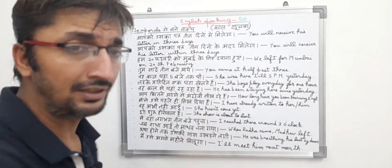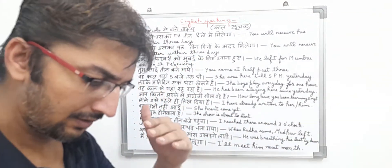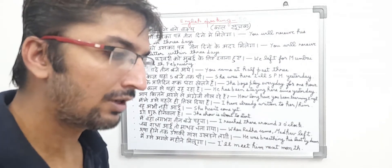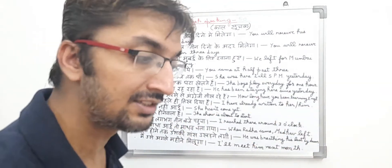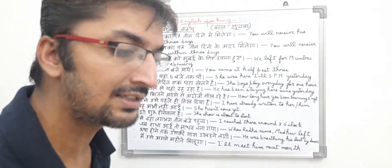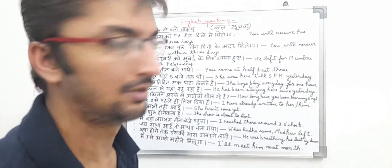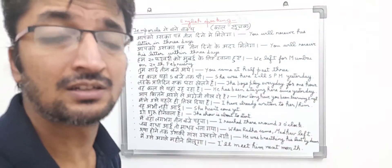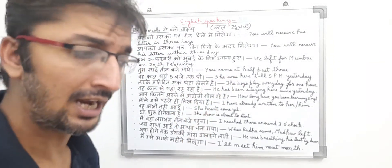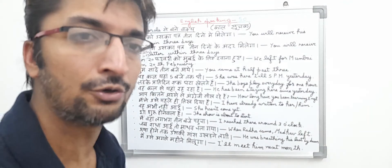Temporal se bane vaakya hai, yaani kaal sujak. Basically, temporal means it tells about the time period of a particular incident — when the incident is going to happen or when the incident had happened. So it basically tells about the time period or duration of that sentence. In Hindi, it is known as kaal sujak. I will read the sentences in Hindi and try to translate them into English so that it becomes easier for you to understand.